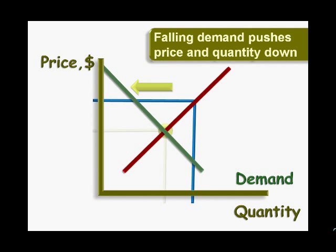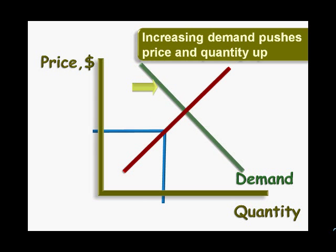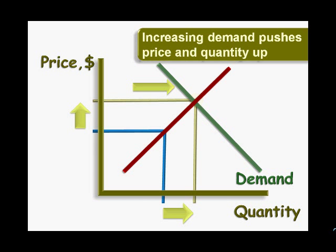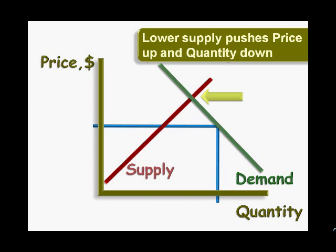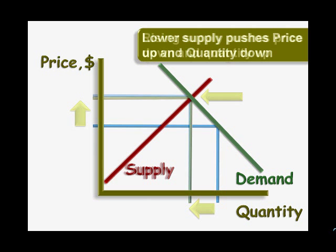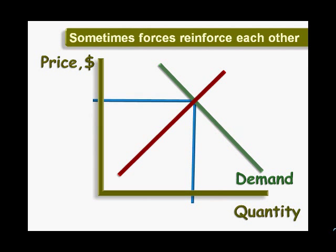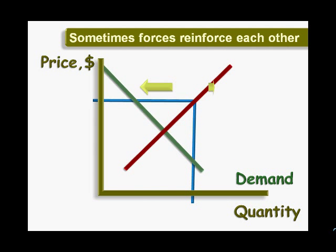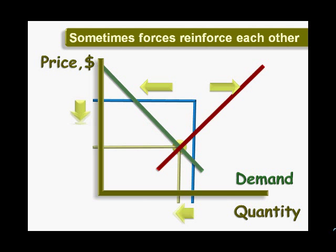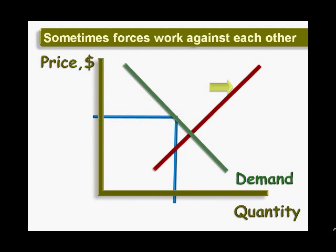Understanding market forces is essential to understanding what is happening in a marketplace. Supply and demand can either increase or decrease. Thus, the effect of market forces can be summarized by four simple rules: falling demand puts downward pressure on prices and quantity; increasing demand puts upward pressure on prices and quantity; lower supply puts upward pressure on price but downward pressure on quantity; and increasing supply puts downward pressure on price and upward pressure on quantity. Sometimes more than one force is at work, and the effects can reinforce each other or they can work against each other.